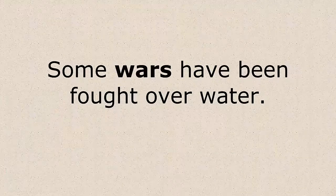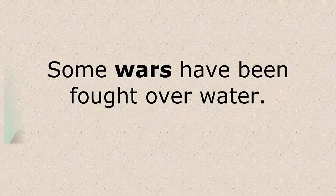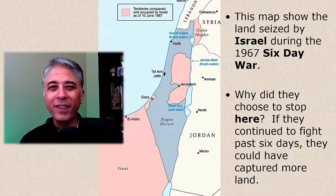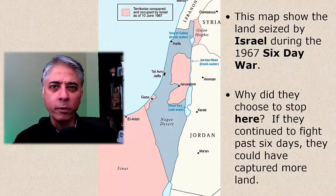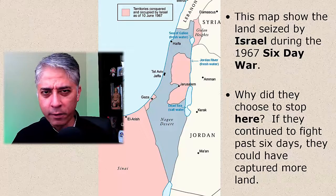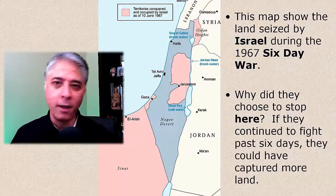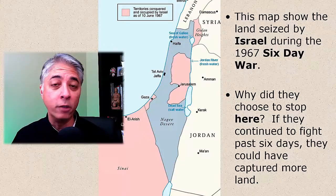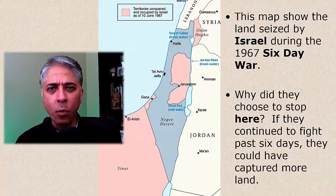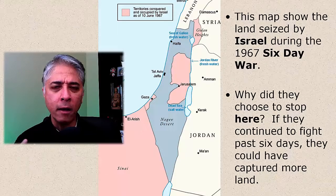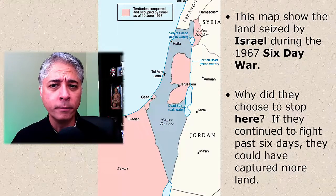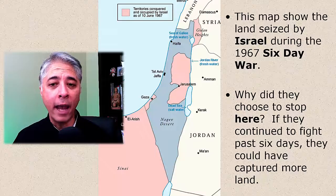Some wars have even been fought over water. I want to briefly tell you about a war called the Six Day War. This is one of the most famous wars in history for a variety of reasons — partly because it was such a dramatic war, fought in just six days. Israel was fighting this war against three of their neighbors. Israel was essentially outnumbered, fighting against Syria, Jordan, and Egypt all at once.